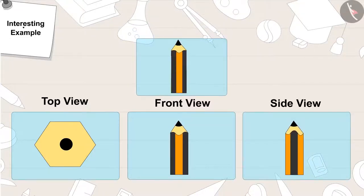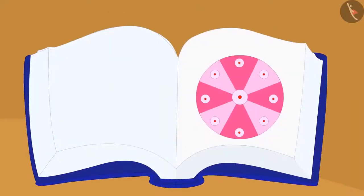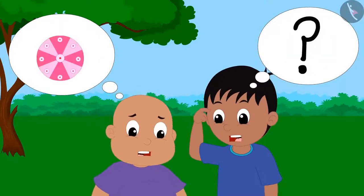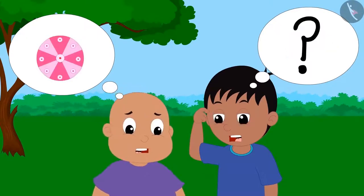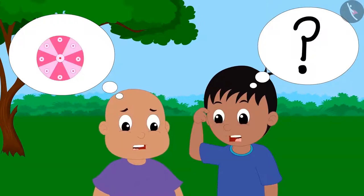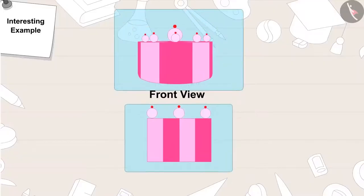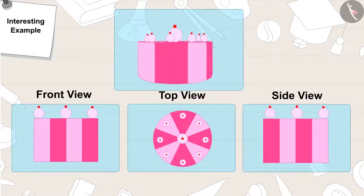Gaggoo then told Raju and Bablu: 'This is the next picture.' He turned the page and asked them to identify the object. They thought and thought, but Raju and Bablu still couldn't identify it. 'This is a cake.' A cake looks like this in front view. From above, in top view, it looks like this. And in side view, it looks like this.